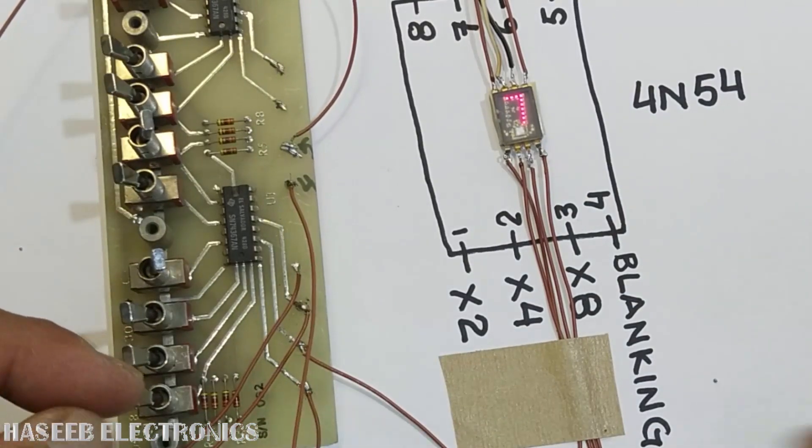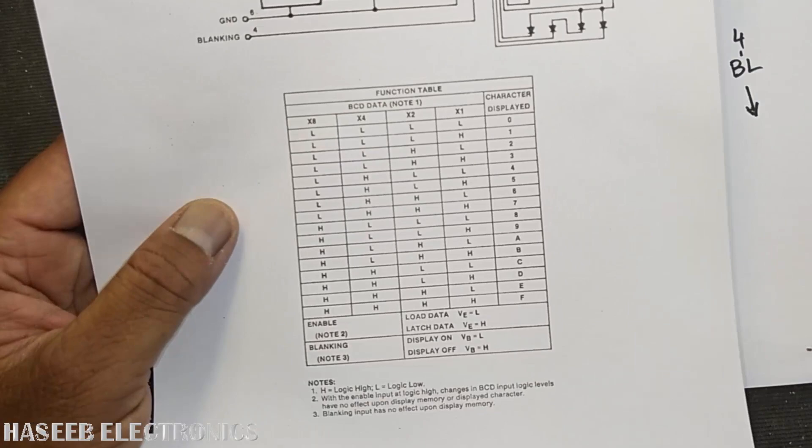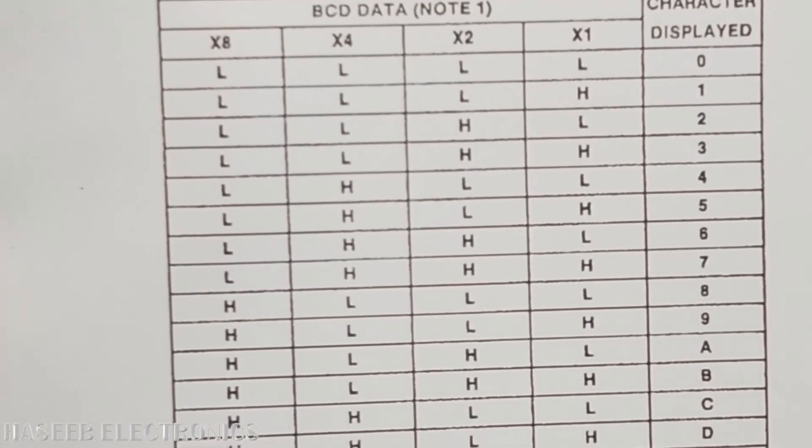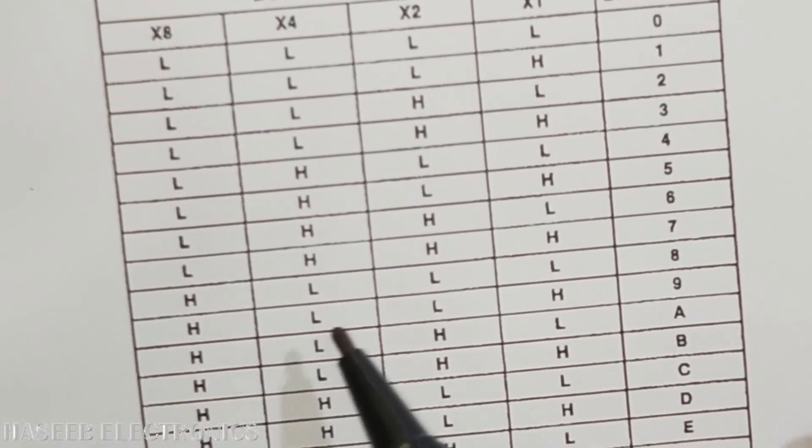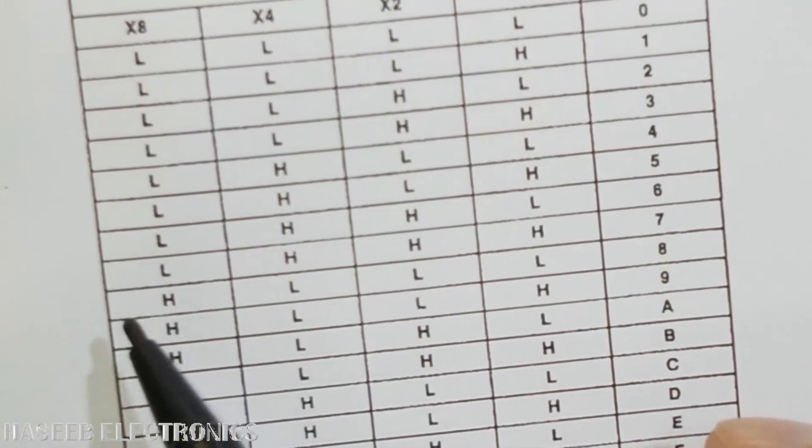1000, that is also in the truth table. When we work with any type of IC, any component, we must follow the data sheet.